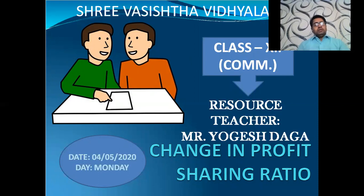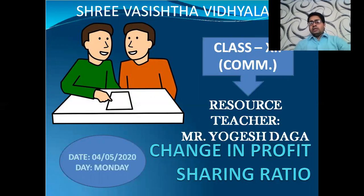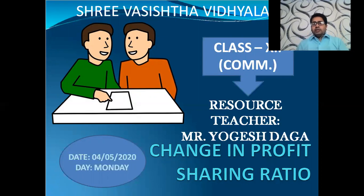This chapter on change in profit sharing ratio covers various topics: adjustment for accumulated reserves, revaluation of assets and liabilities, treatment related to goodwill, treatment related to any type of losses, and today's topic — adjustment of capital. In this chapter, where the old ratio and new ratio of partners are given, we have calculated the sacrificing ratio and the gaining ratio.